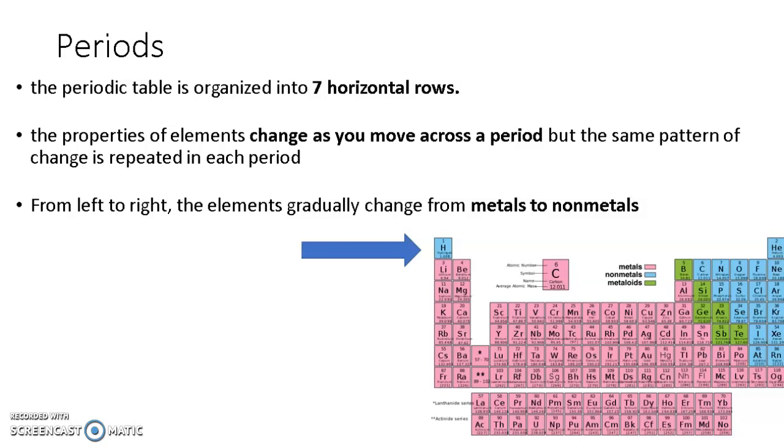The periodic table is organized into seven horizontal rows, which are called periods. And this is a very important point, you need to know this.